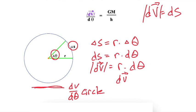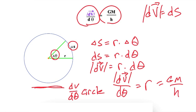So dv over dθ equals r. Well, r is the radius of this dv/dθ circle. And if it equals dv over dθ, then it must equal GM over h. So now we know the radius of our dv/dθ circle.